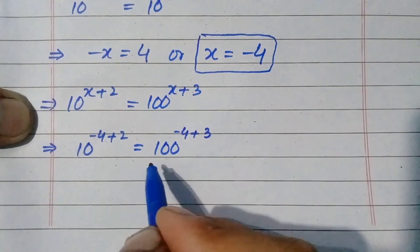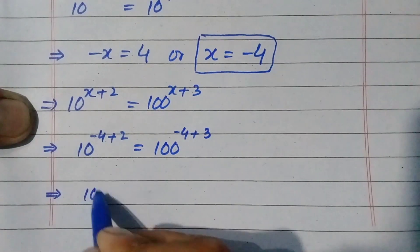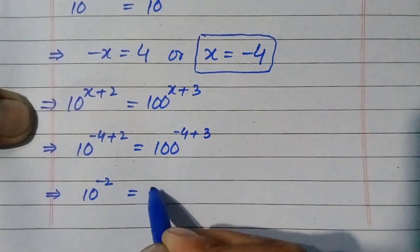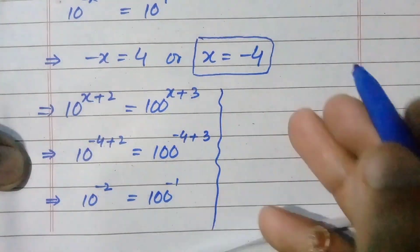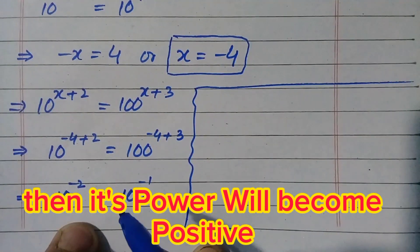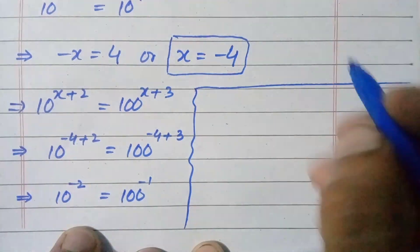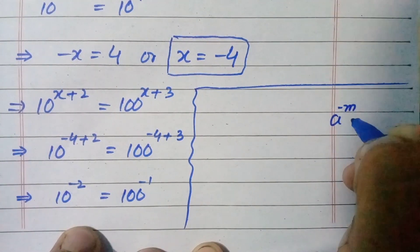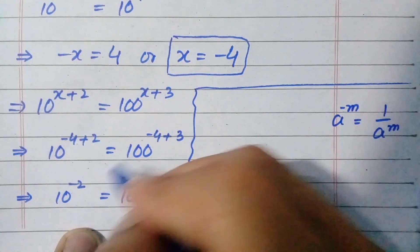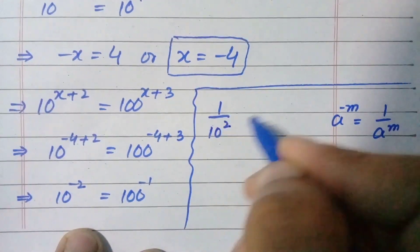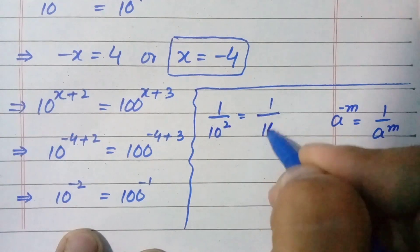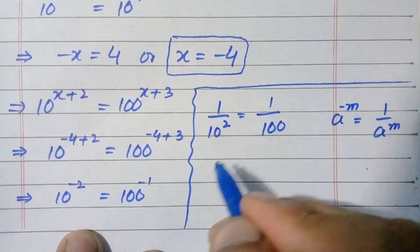Simplifying both sides: minus 4 plus 2 gives minus 2, and minus 4 plus 3 gives minus 1. Since the powers are negative, we use the formula a power minus m equals 1 over a power m to move them to the denominator. The left-hand side becomes 1 divided by 10 raised to power 2, and the right-hand side becomes 1 divided by 100.